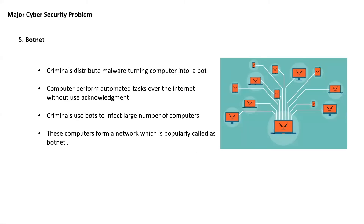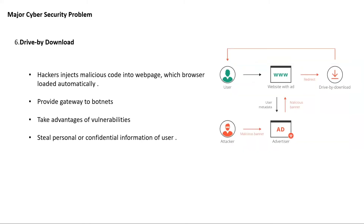Fifth is botnet — a collection of infected computers remotely controlled by a hacker. Once malicious software is installed, the hacker gains remote access without the user's awareness and can commit crimes like financial fraud, malware distribution, identity theft, spam mailing, and storing illegal content. Next is drive-by download, where hackers inject malicious code into a web page that the browser loads automatically, creating a gateway for botnets. It also attacks less secure software and helps steal personal or confidential user information.